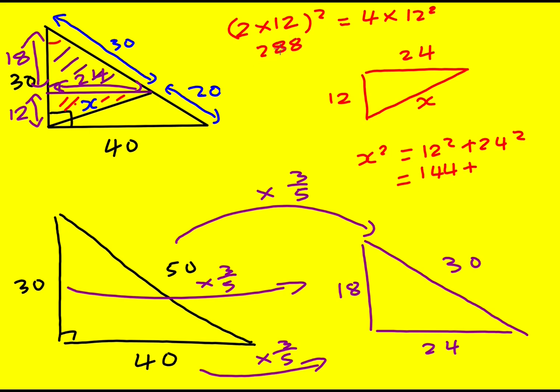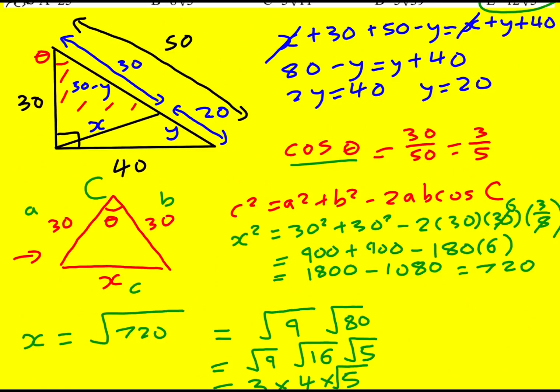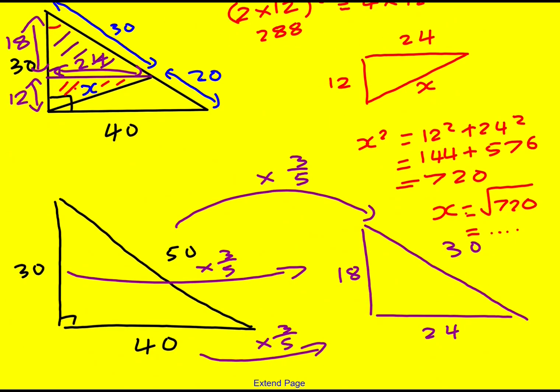That's going to give me 576 which gives me 720. And from then on we're back to simplifying 720 to give us the answer, which became 12 root 5.